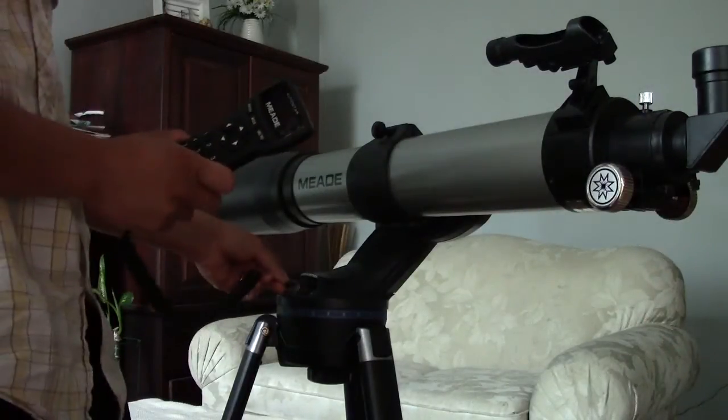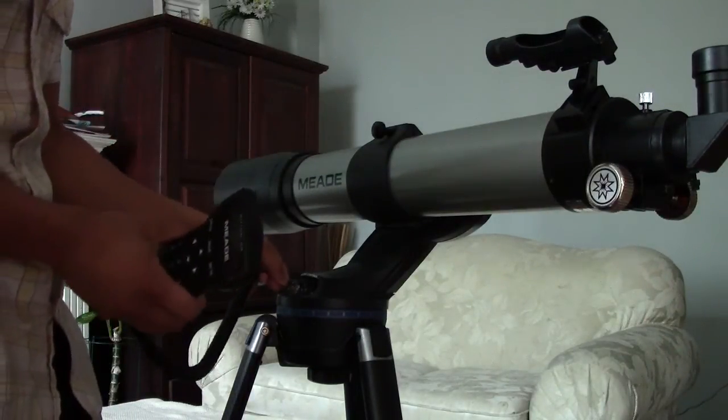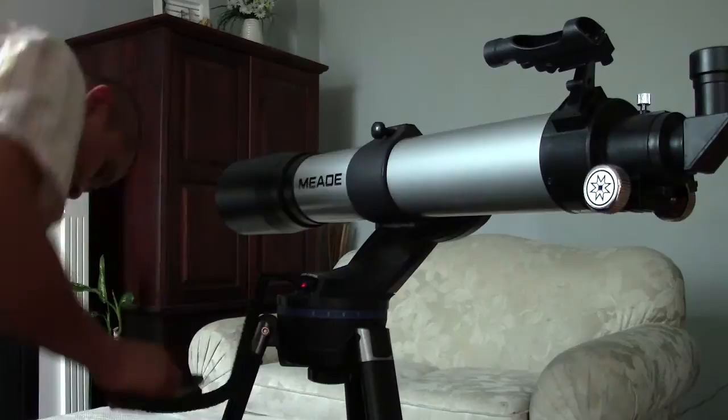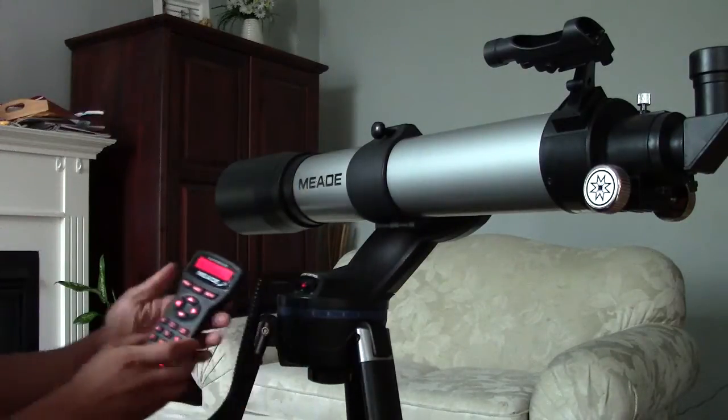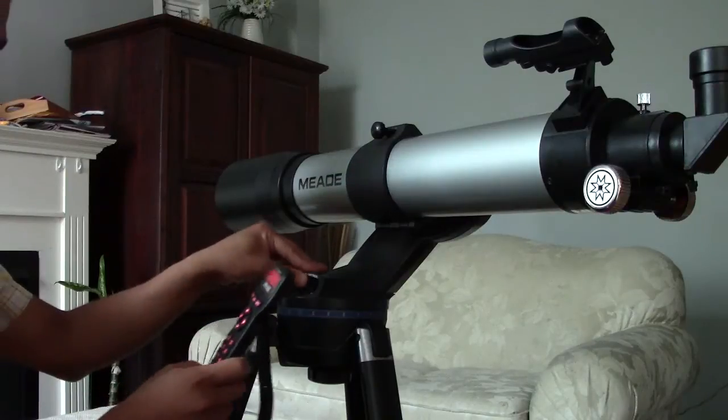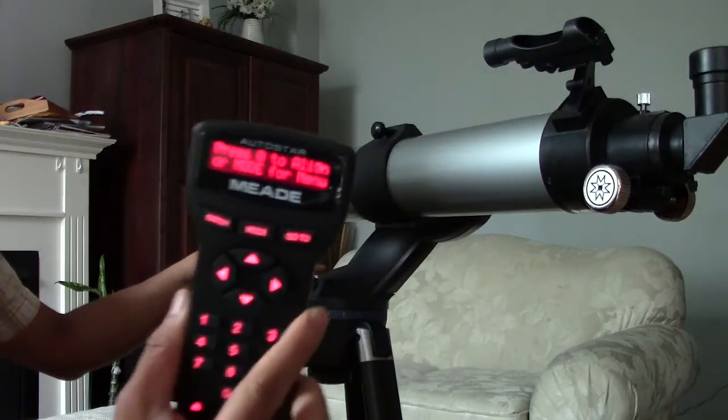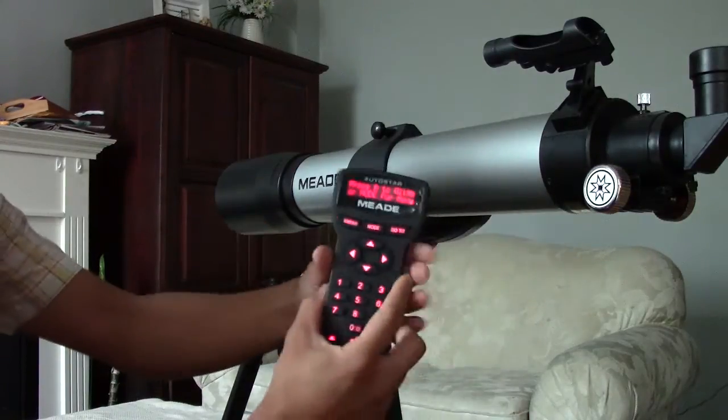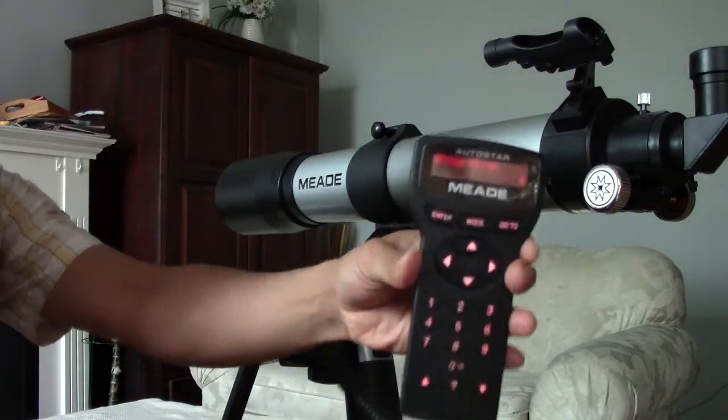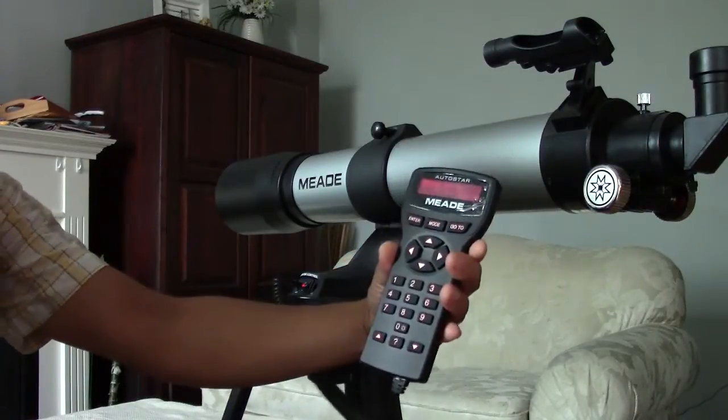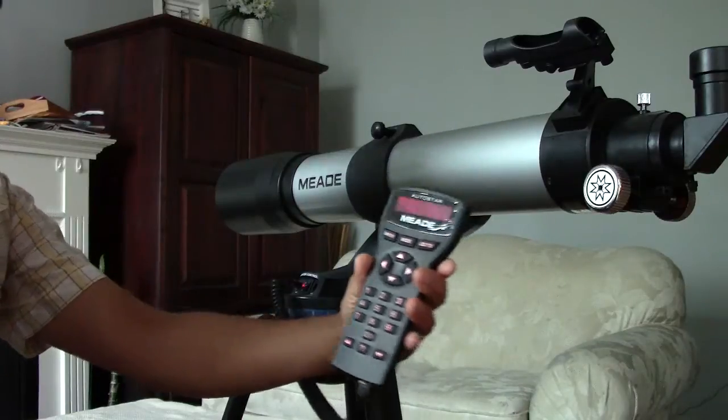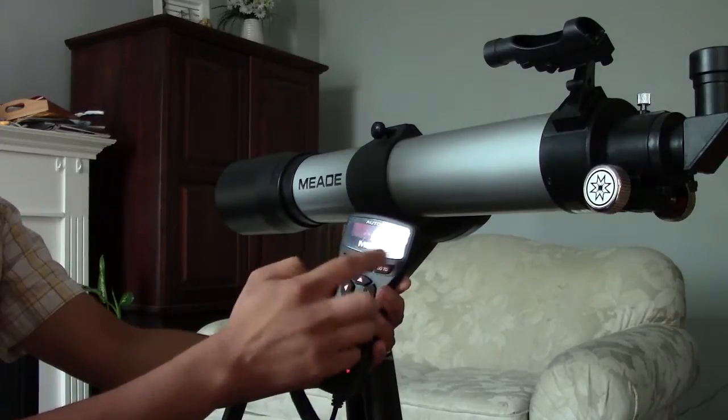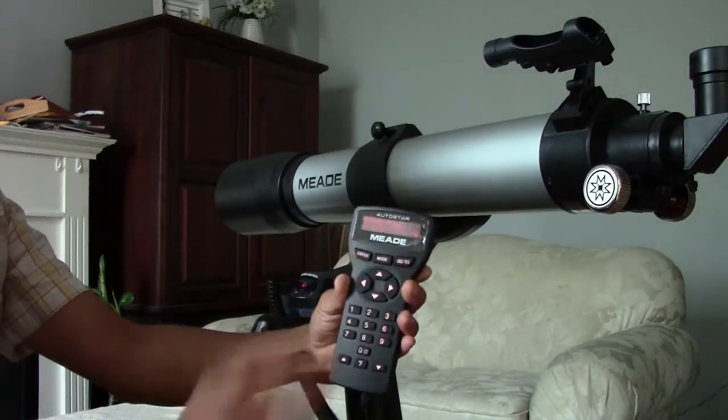You put the keypad into the HBX port and you turn it on. It says 'press zero to align,' so I'm going to align it. Press zero. I'm just going to hit enter here. It's just instructing me to make sure it's level and that it's pointed north.